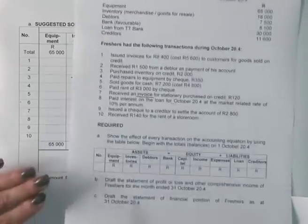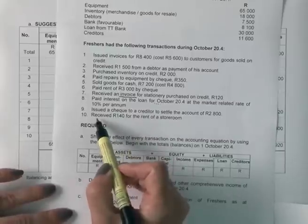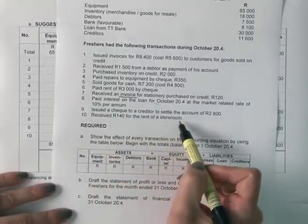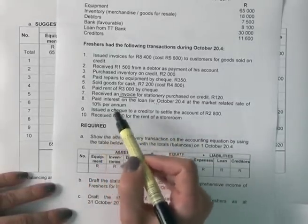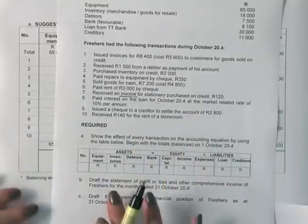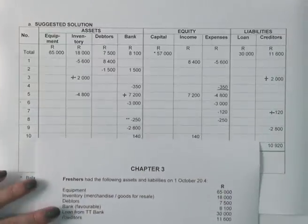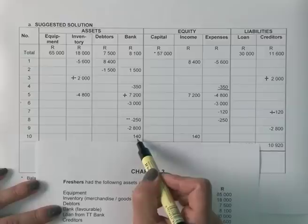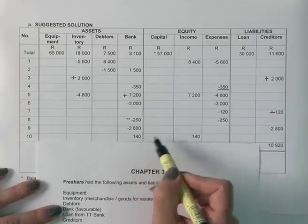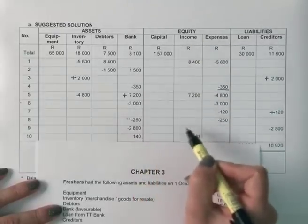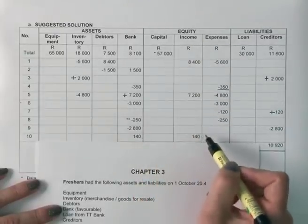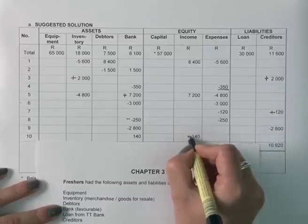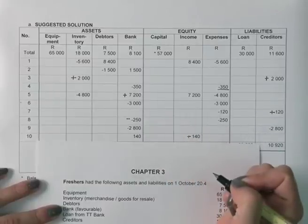Transaction ten: received 140 Rand for rent of a storeroom. If we receive money, bank is influenced positively — we increase bank by 140 Rand. We also increase profits, because the more rent received, the higher the profits. So there is an increase under the equity item as well.